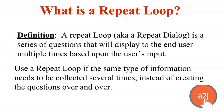The first topic is repeat loops. A repeat loop, also known as a repeat dialogue, is a series of questions displayed to the end user multiple times based upon that user's input. You want to use a repeat loop if you want to gather the same type of information several times. Instead of creating 50 questions, you can create just five questions in a repeat loop and ask them ten times if need be. For example, when gathering information about children — your user may have multiple children, but you need the same information about each child: name, birth date, biological father, and school.